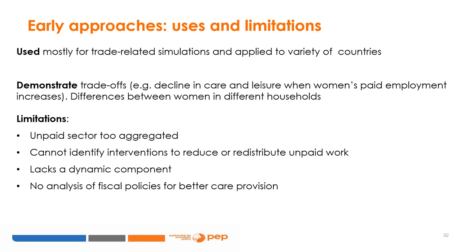The Fontana and Wood approach may differ in computational procedures or disaggregation of sectors, factors, and households across different countries, but the overall methodology and assumptions remain similar. This integration of unpaid household work and leisure allows emphasis on trade-offs neglected in conventional CGE models. For example, in Fontana's Bangladesh model, expansion of garment exports leads to increased market participation and wages for women with primary and secondary education, but also to a decline in their time for both care and leisure, with differences between rich and poor households also exposed.